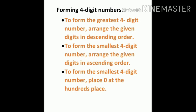And if you want to form the smallest four digit number, you have to arrange the given digits in ascending order. But remember, if zero is there in these four digits, you have to place zero at the 100th place.